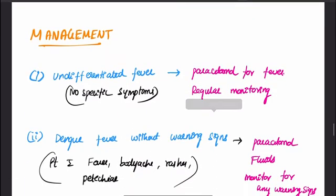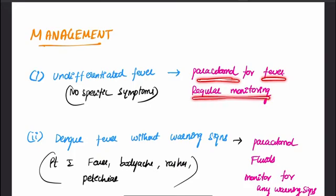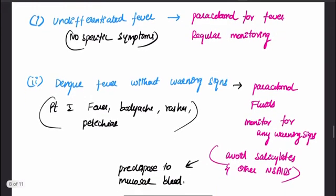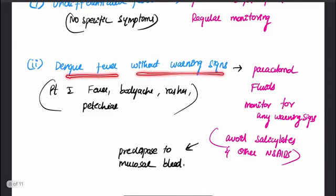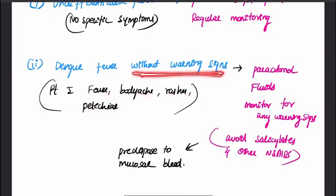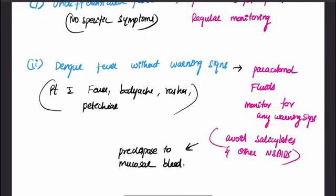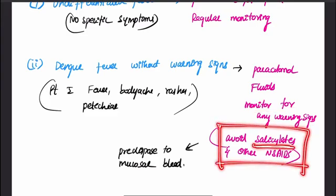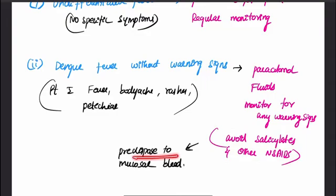Management differs for different stages. For mild Dengue — undifferentiated fever with no specific symptoms — we give paracetamol and monitor the patient. For Dengue fever without warning signs — fever, body ache, rashes, petechiae but no warning signs — we give paracetamol, advise plenty of oral fluid intake, and monitor for warning signs. Importantly, salicylates and other NSAIDs should be avoided as they predispose to mucosal bleeding.